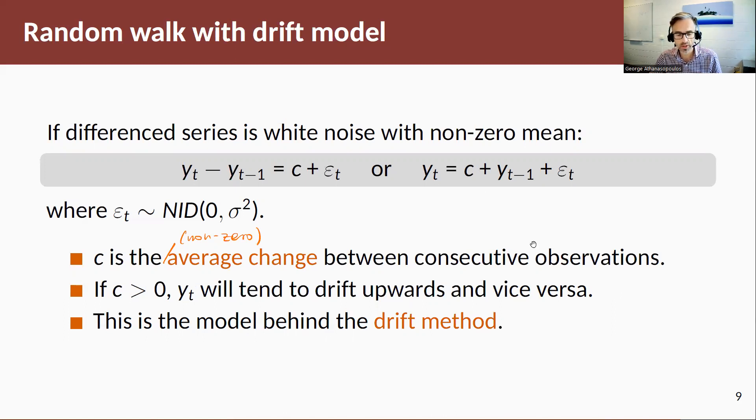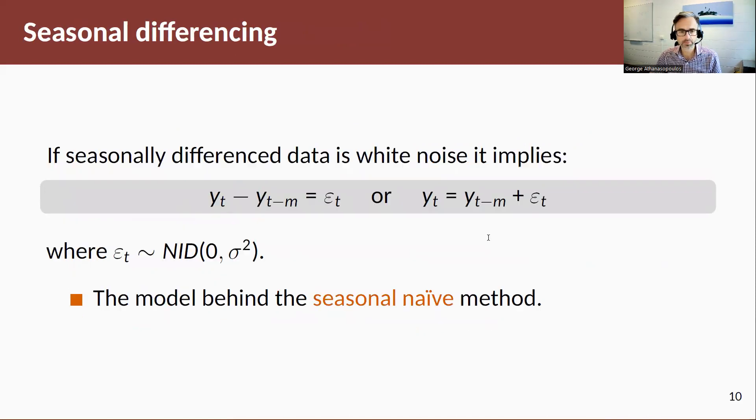This is the model behind the drift method that we saw in earlier sections of the book. Now if we seasonally difference data and that results in a white noise process, then we can think about a seasonal random walk, and this is the model behind the seasonal naive method.